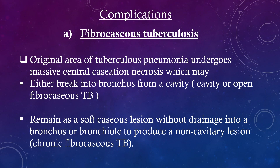Complications — Fibrocaeous tuberculosis: The original area of tuberculosis pneumonia undergoes massive central caseation necrosis, which may either break into the bronchus forming a cavity, or remain as a soft caeous lesion without drainage into a bronchus or bronchiole, producing a non-cavitary lesion, i.e., chronic fibrocaeous tuberculosis.